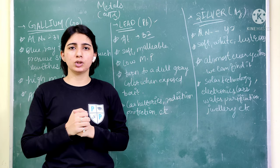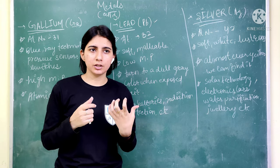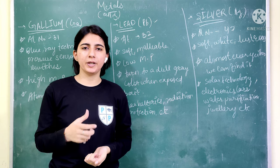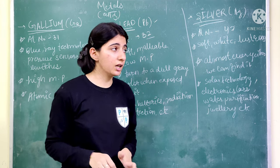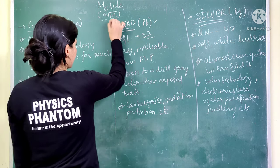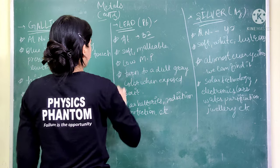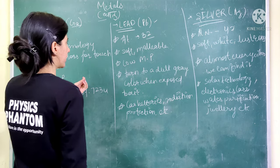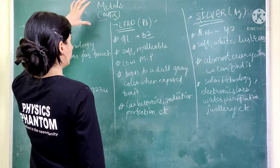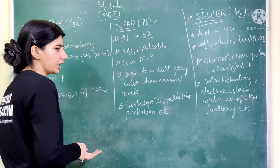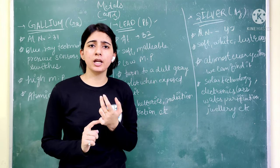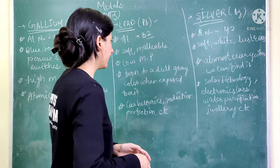Lead is soft and malleable, with both malleable and ductile properties. Malleable means it can be converted into sheets, and ductile means it can be converted into wires.